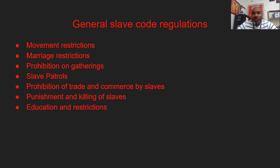The slave codes can be broken down into seven categories. First, movement restrictions. Second, marriage restrictions. Third, prohibition on gatherings. Fourth, the establishment of slave patrols — people who patrolled the slave quarters to make sure enslaved people weren't leaving at night or trying to escape, and who would also bring back escaped slaves. Fifth, prohibition of trade and commerce by slaves — in many places, slaves couldn't own things or trade without their slave owner's permission.